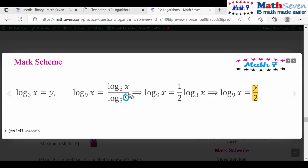Log 9, well 9 is 3 squared, so you have log 3 squared to the base 3. That brings the 2 down: 2 log 3 base 3, which means one half. So one half times log x to the base 3, which is y. Now log 3 base 3 equals y.